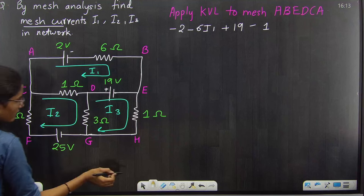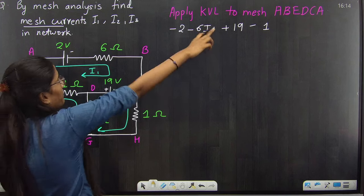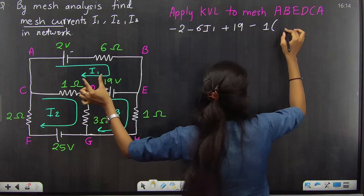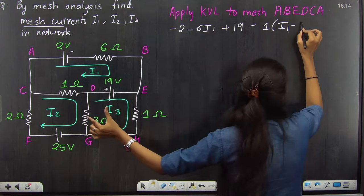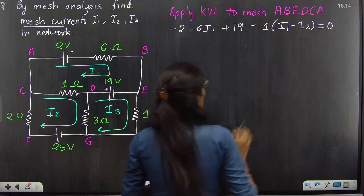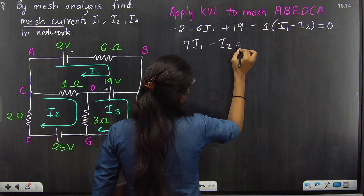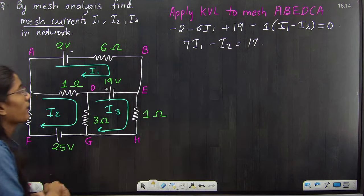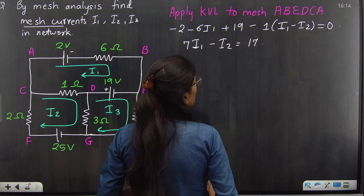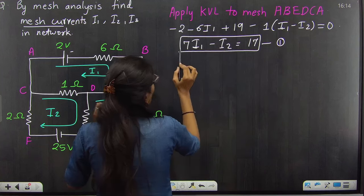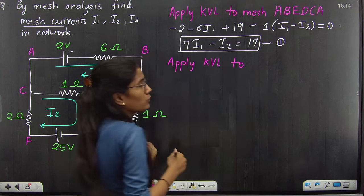Minus 1. Here we have two currents. This branch is linked to two meshes, one which has I1 current and the other which has I2. But we have to consider I1 first, then minus I2. So this will become minus I1 minus I2, and this equals zero. When you arrange this, then the answer is 7I1 minus I2 equals 17. This is equation number one.